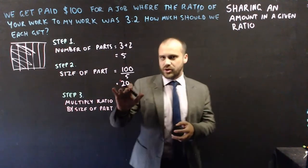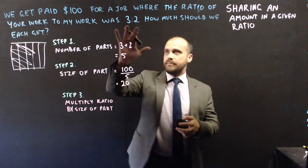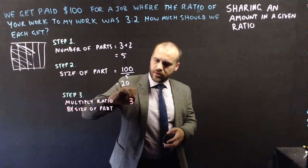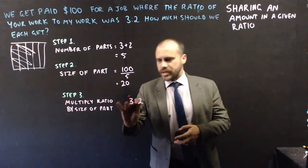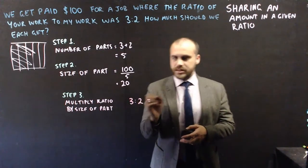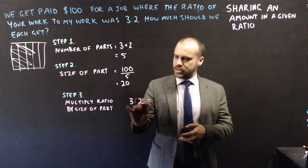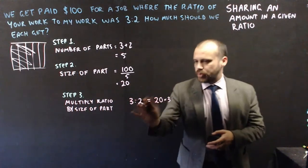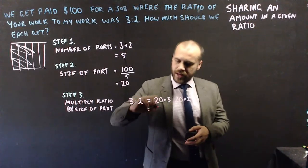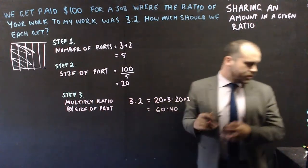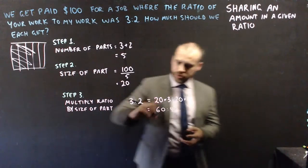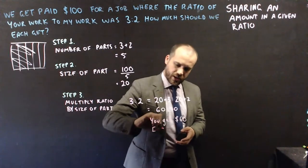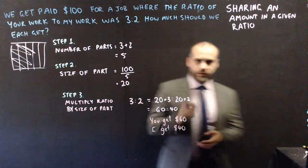Step 3 is to take the ratio and multiply it by the size of each part. We're getting paid in a ratio of 3 to 2. If I multiply each side by 20, I get 3 to 2 equals 20 times 3 to 20 times 2, which is 60 to 40. So you get $60 and I get $40.